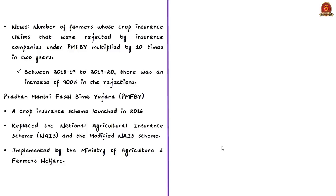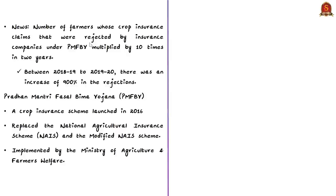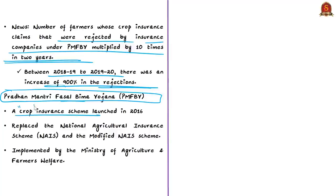This news article is about recent developments regarding the Pradhan Mantri Fasal Bima Yojana. The number of farmers whose crop insurance claims were rejected by insurance companies under the scheme has multiplied tenfold in two years — between 2018-19 and 2019-20, there was an increase of 900% in rejections. The scheme is a crop insurance scheme launched in 2016. It replaced the National Agricultural Insurance Scheme and the Modified National Agricultural Insurance Scheme. It is currently implemented by the Ministry of Agriculture and Farmers Welfare.